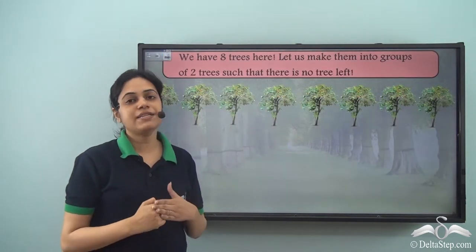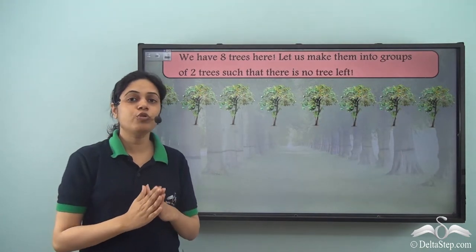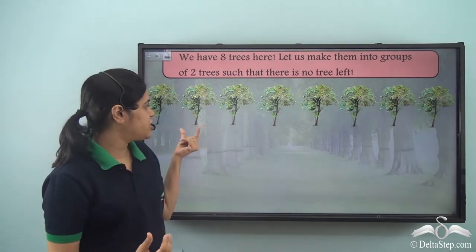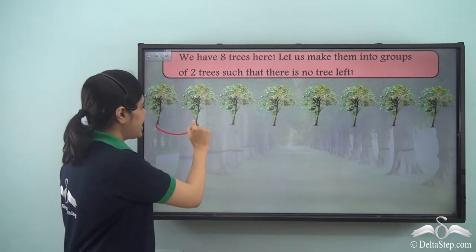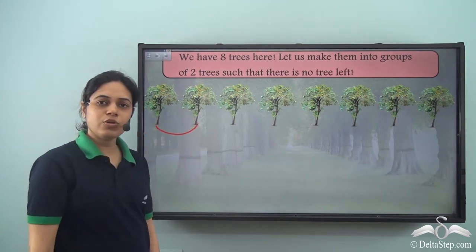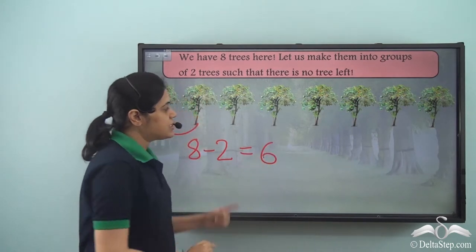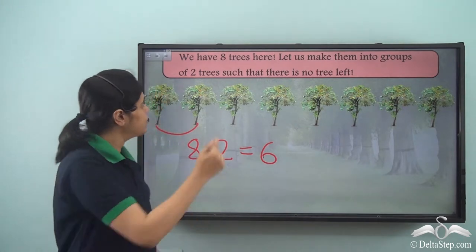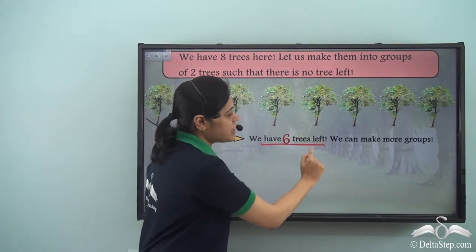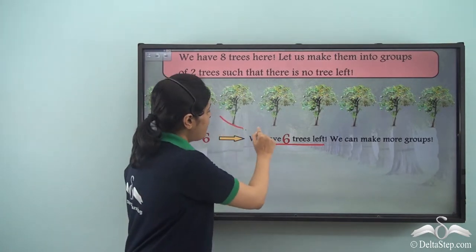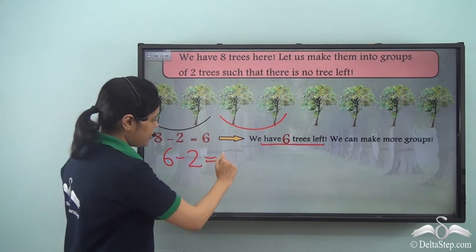Now we have eight trees here — one, two, three, four, five, six, seven, eight — and once again we want to form groups of two trees. So we want each group to contain two trees. First I take these two trees and form a group. From eight I subtract two, and I have six trees still left. So these two are taken into a group: eight minus two gives me six. We still have six trees left so we can make more groups. Now I take these two, and from six I subtract two again — this is repeated subtraction — and I get four.